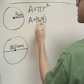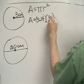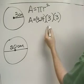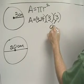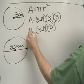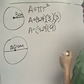In this case, the radius is 3, so we're going to multiply 3 times 3 again. We know that 3 times 3 is 9, so now we need to multiply 3.14 times 9 in order to get the area.